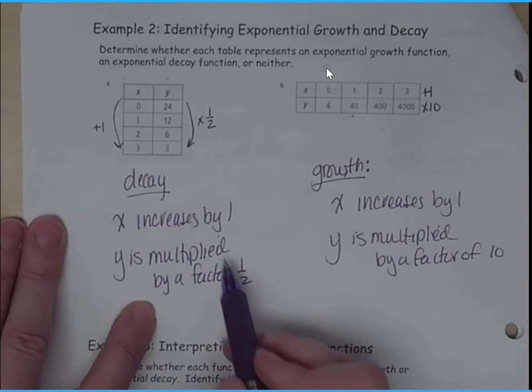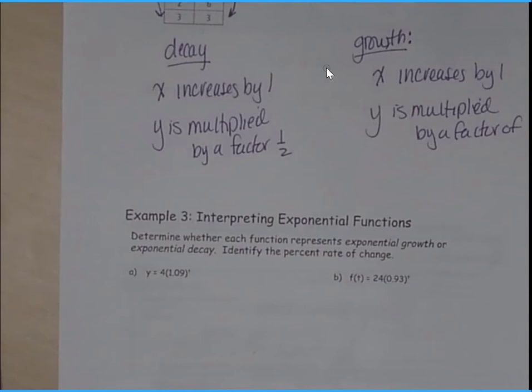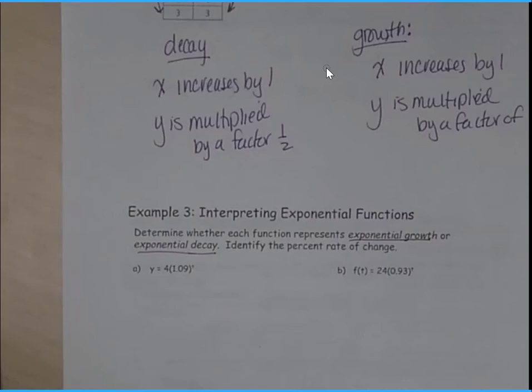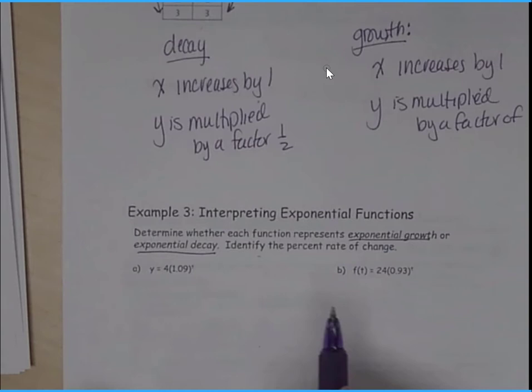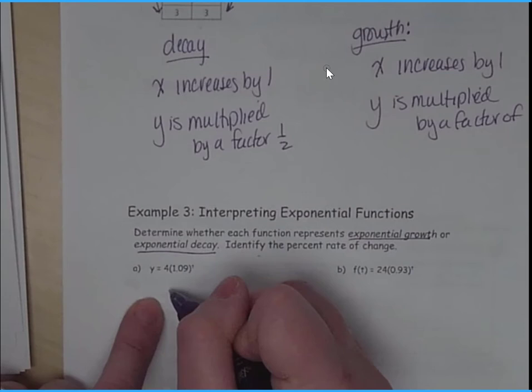So let's take a look. Determine whether each function represents exponential growth or exponential decay, and then identify the percent rate of change. Now, remember, we always start out with 1%. But first, if we take a look at this, since it's greater than 1, I know it's an exponential growth.